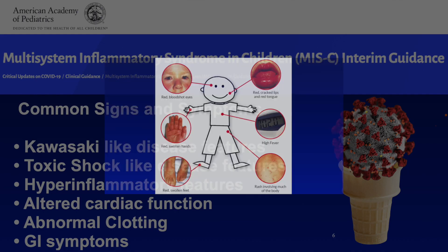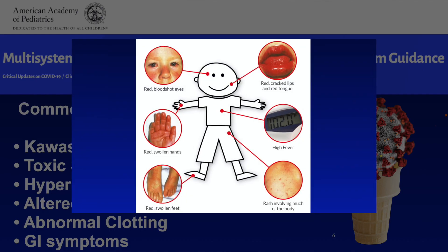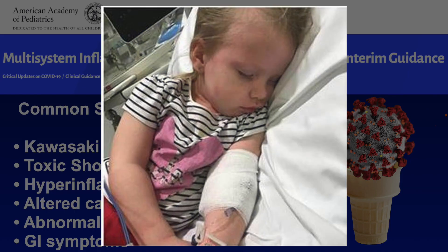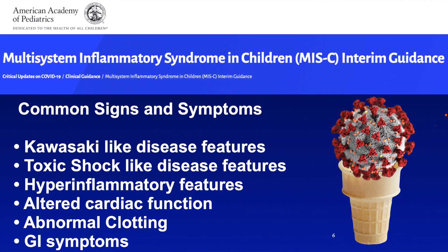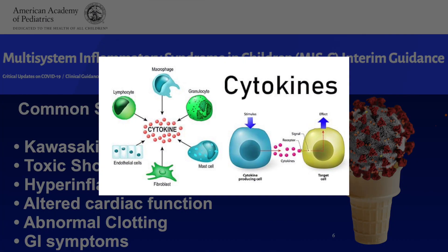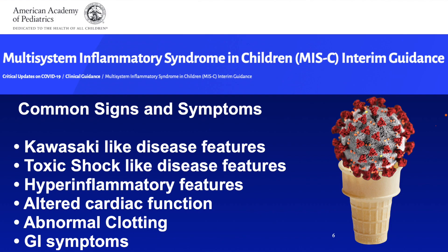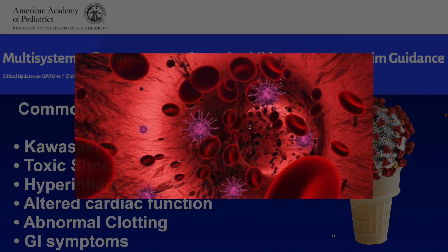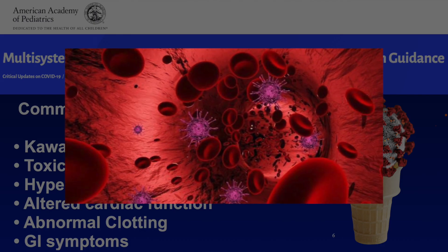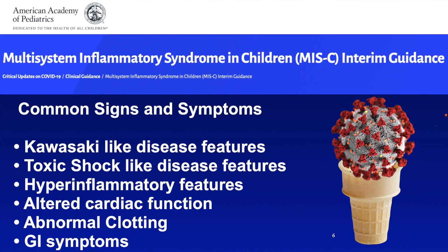Now let's look at the common signs and symptoms of MIS-C. It looks like Kawasaki, but it also has features of toxic shock, where children become hypotensive and look severely ill. There are hyper-inflammatory features — the inflammatory system just goes haywire; you'll hear the word cytokine storm. They have altered cardiac function, oftentimes myocarditis leading to hypotension and needing pressors. They have abnormal clotting where their entire clotting cascade goes haywire and they become thrombotic. And oftentimes they'll have GI symptoms.